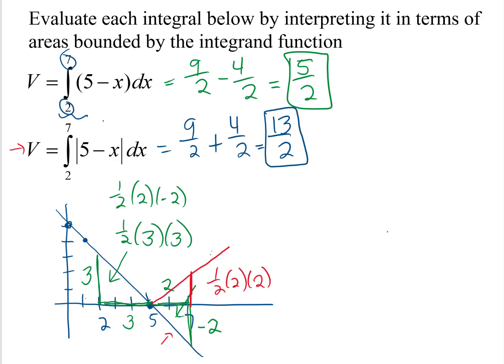Now this one is the net area, and the second integral actually computed the total area of the first one because we did that absolute value. So instead of subtracting off that second triangle, we added it.